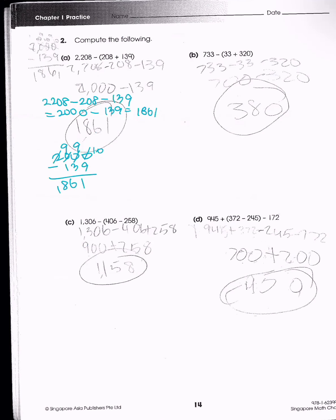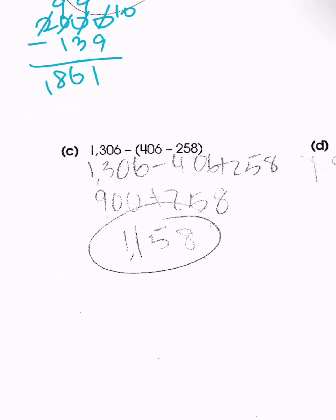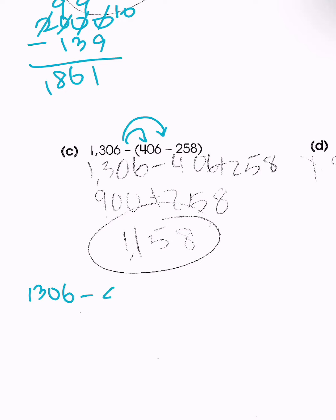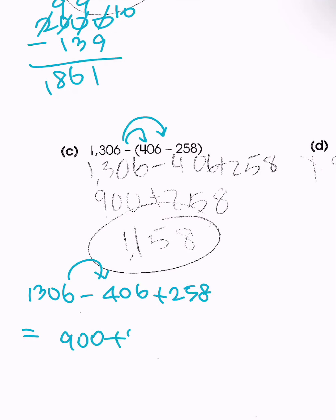Going to problem C, we distribute the negative sign to get 1,306 minus 406 plus 258. Doing the first two gives 900 plus 258, which equals 1,158.